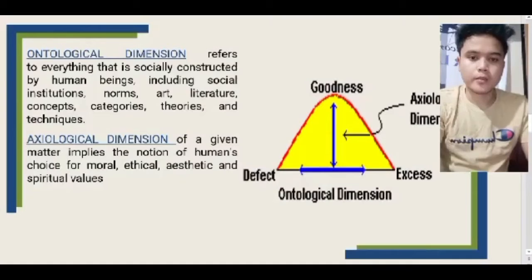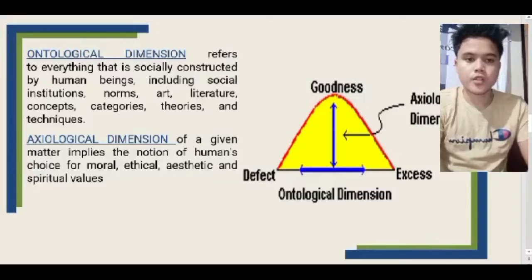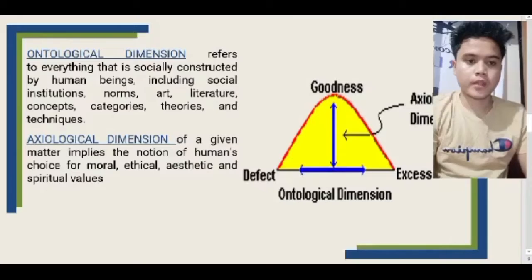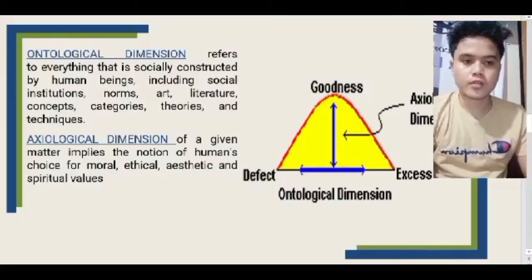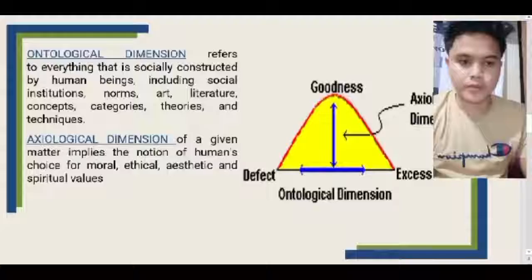The ontological dimension refers to everything that is socially constructed by human beings, including social institutions, norms, arts, literature, concepts, categories, theories, and techniques. The axiological dimension of a given matter implies the notion of human choices for moral, ethical, aesthetic, and spiritual values.